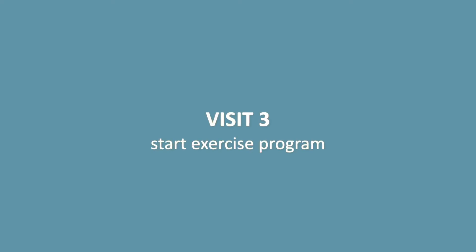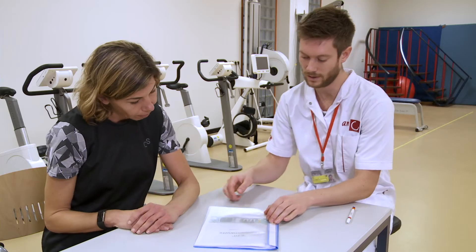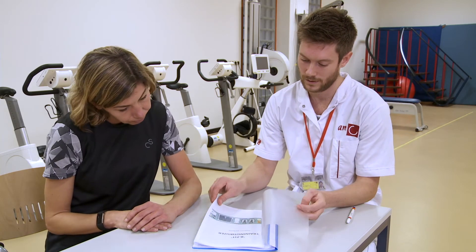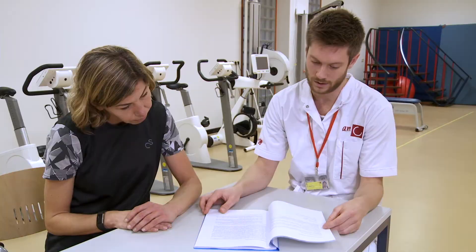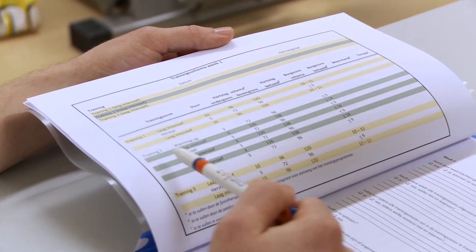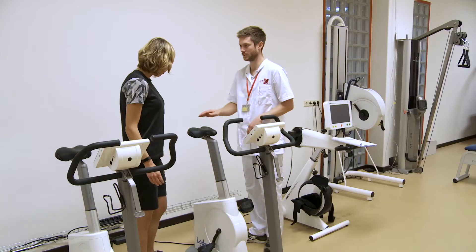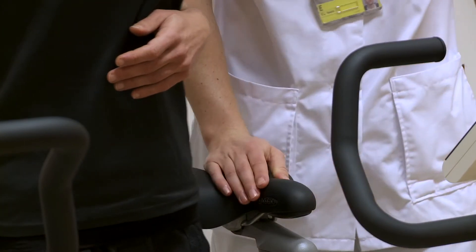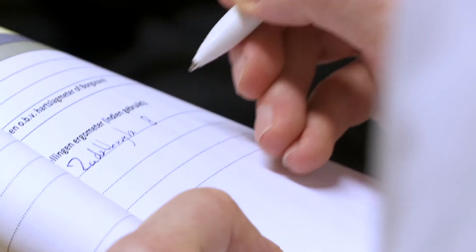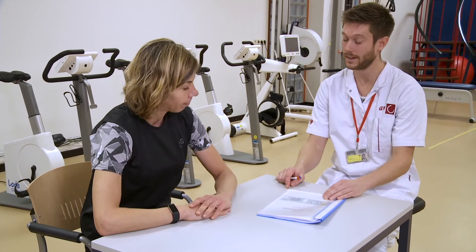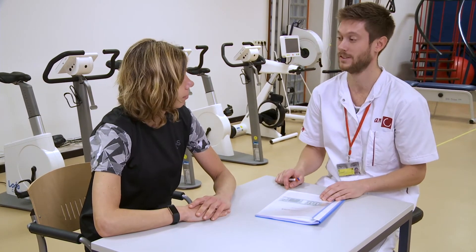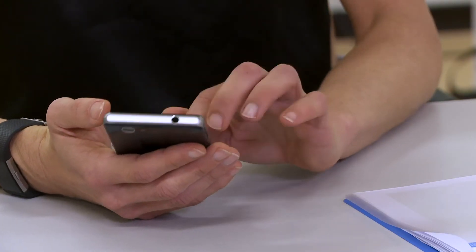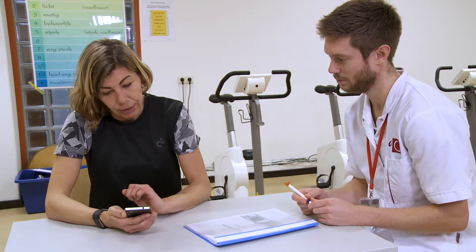Visit 3: Start exercise program. Give the patient workbook to the patient. Inform the patient about how to train according to the established schedule and the importance of updating the training log in the patient workbook. Discuss usage and adjustment of the ergometer and record the ergometer settings in the patient workbook. Discuss with the patient how monitoring will take place and schedule a visit for the interim evaluation. Plan this visit after the exercise program has actually started.